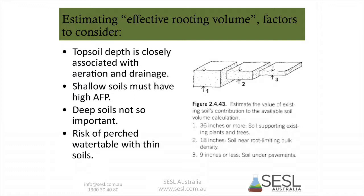Topsoil depth is closely associated with aeration and drainage. Shallow soils must have a high air-filled porosity; for deep soils it's not so critical. This is a trade-off between quantity and quality: if dealing with a very small volume of soil, it really has to be perfect. With greater depth, the tree is able to work things out for itself to a certain extent. With shallower profiles there's always the risk of a perched water table.